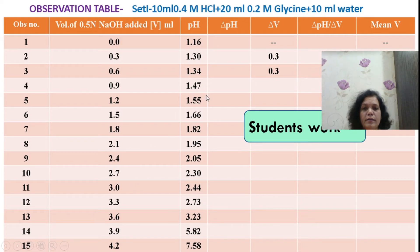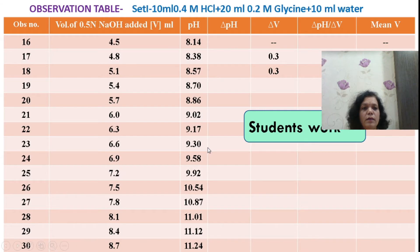These are readings reported for this online practical. I request you to carry out delta pH upon delta V and mean V calculations. Mean V is calculated by adding two volumes divided by 2. Delta pH is the difference between highest and lower values. Delta V - the difference between volumes - remains constant at 0.3. Take at least 30 readings for this titration.